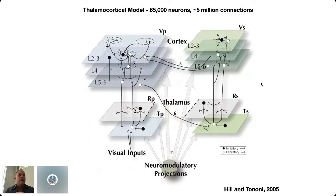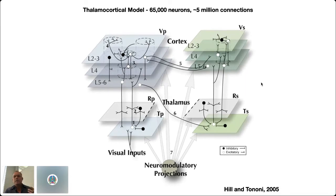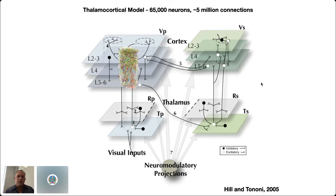We built a computer model of this Guillory and Sherman model using a basic architecture of the cat visual thalamocortical system — visual input coming into a thalamus, reticular nucleus, three layers of cortex, with cortical-cortical communication between a secondary area, and also the output from the primary area from layers 5 and 6 to drive the thalamus in the secondary area. This model has about 65,000 model neurons and about 5 million connections. It also simulated the impact of neuromodulatory projections.